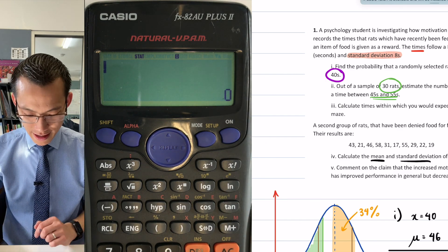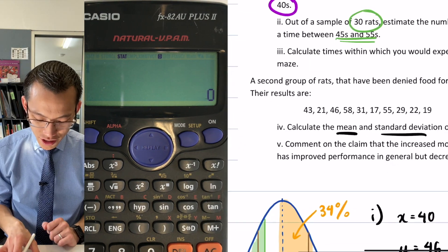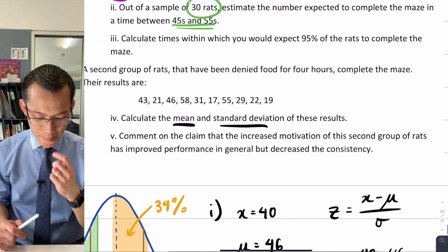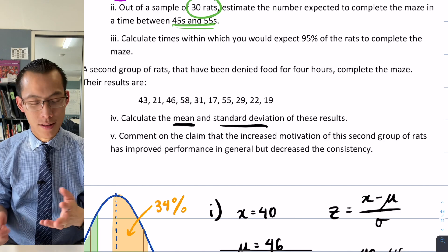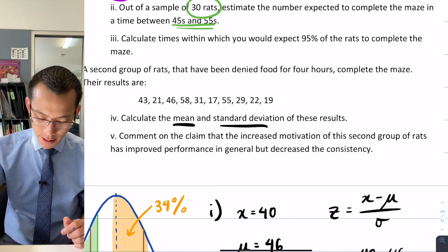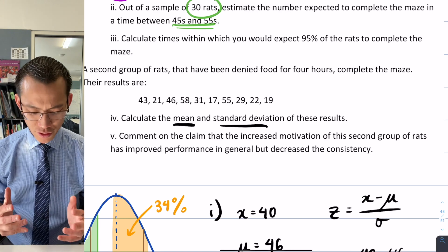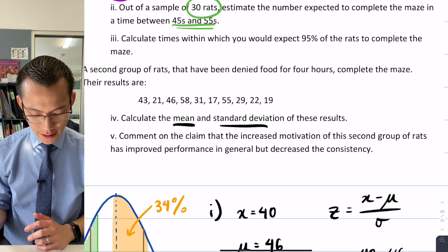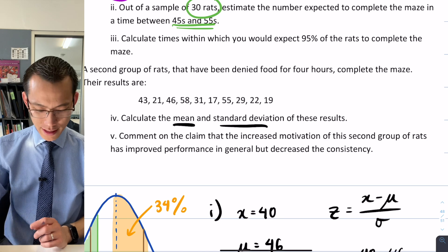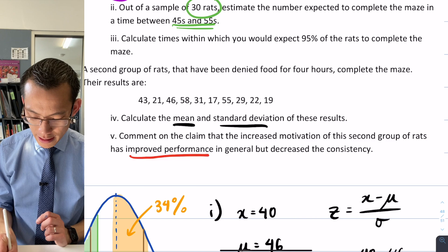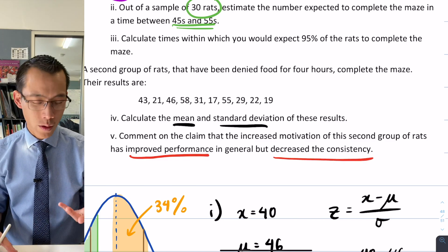Okay, great. So in fact, these two numbers are all I need in my calculator for. So I'll clear that out, don't need it any longer. And now I just need to use the mean and the standard deviation and make a bit of a comparison with the first set of rats in my experiment. It says comment on the claim that the increased motivation of the second group of rats has improved performance in general but decreased the consistency. So there's two claims being made here: improved performance and then decreased consistency.